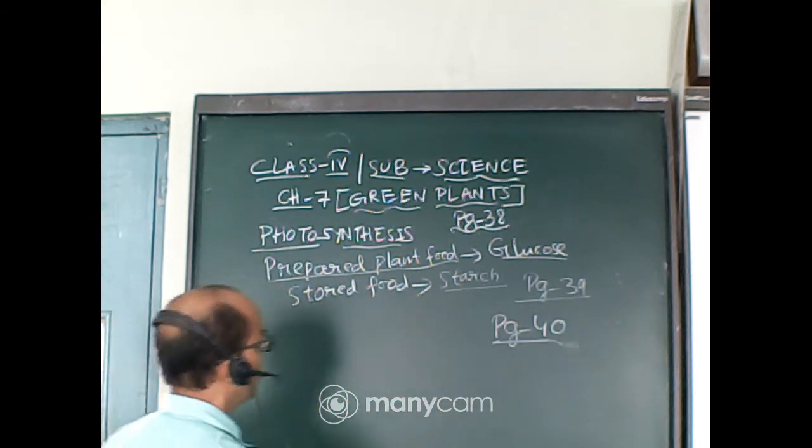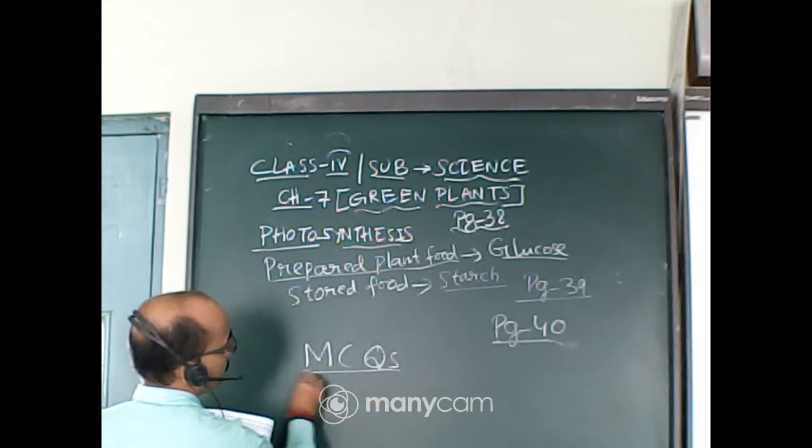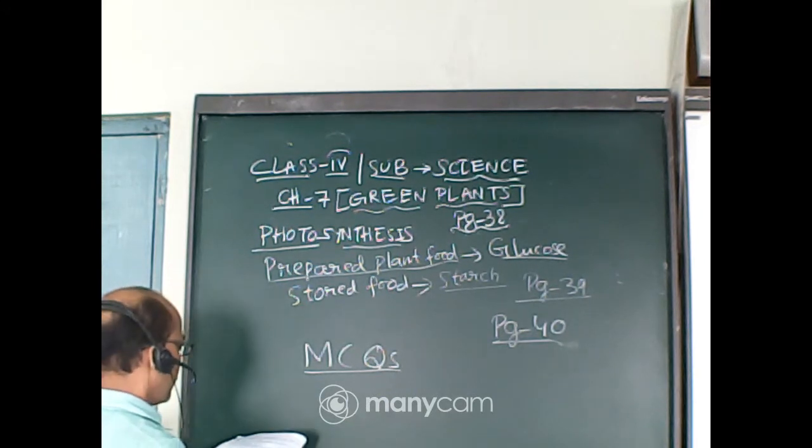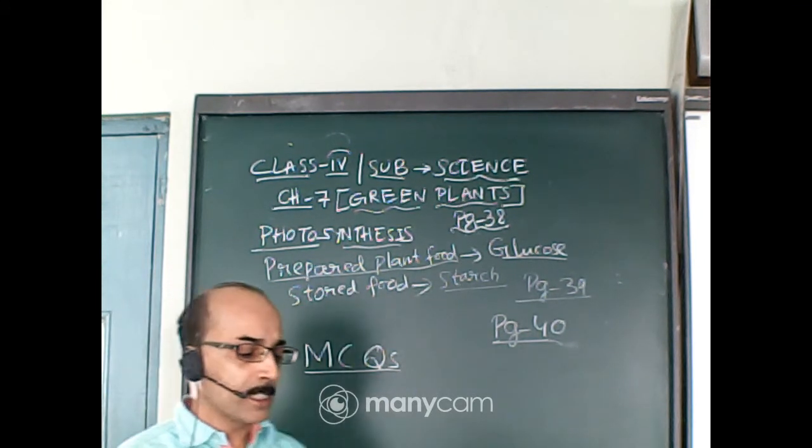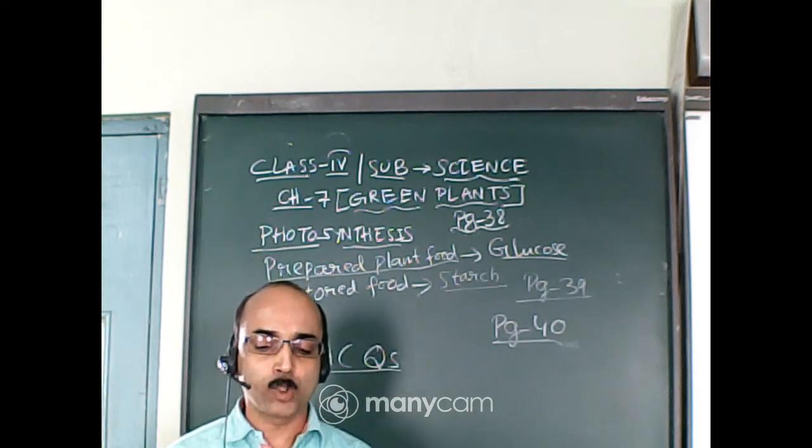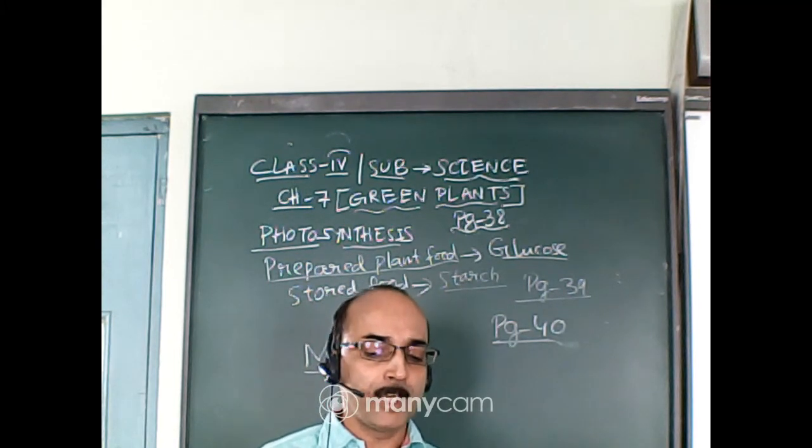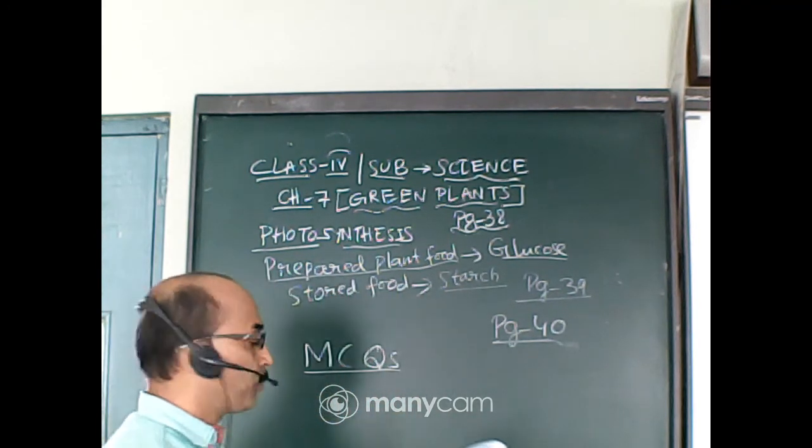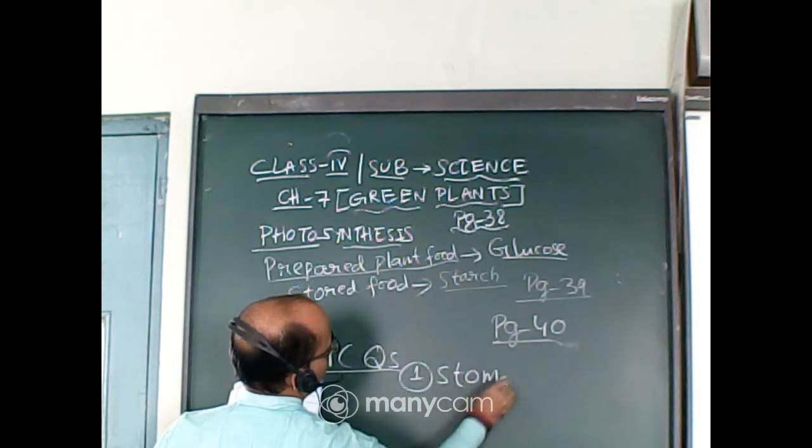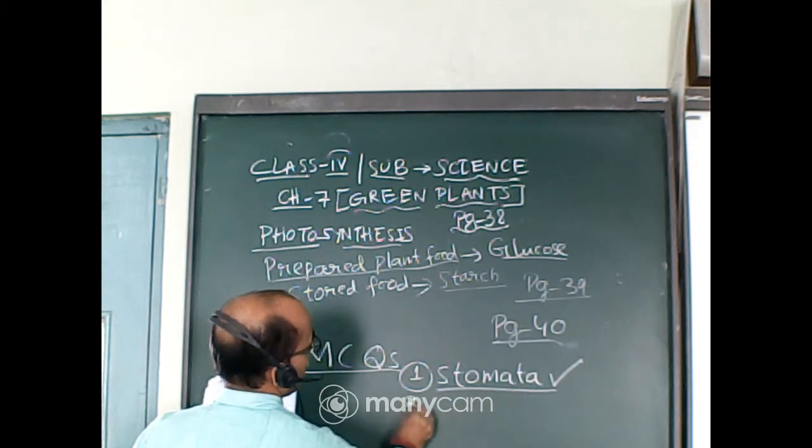Then we will solve the exercise. Fill in the blanks type answer. Number one: the leaves have tiny pores called... blank... stomata. The leaves have tiny pores called stomata. So tiny pores, they are called stomata.